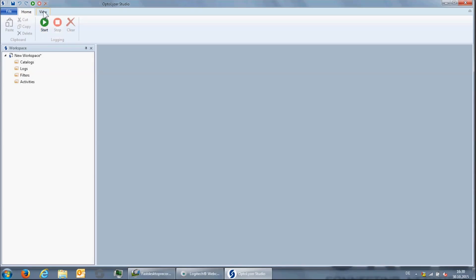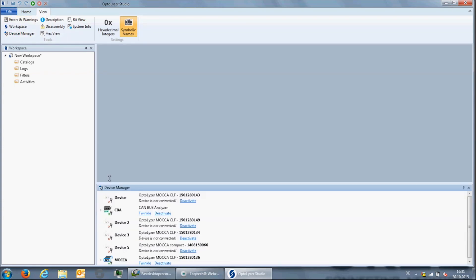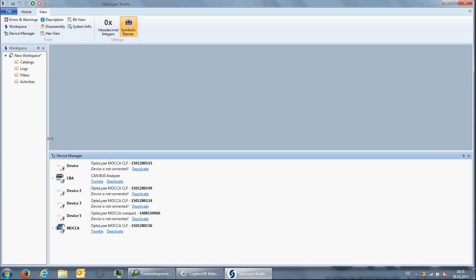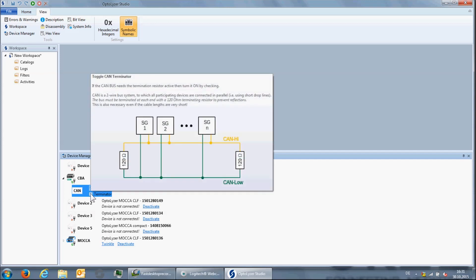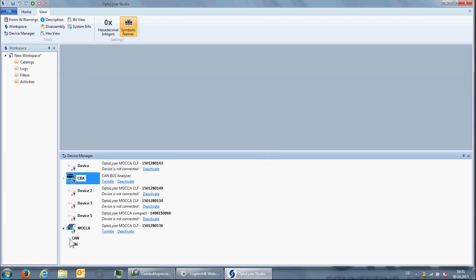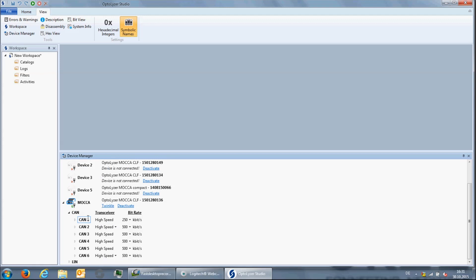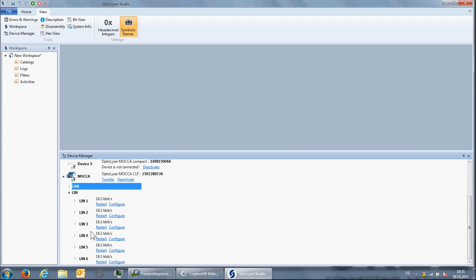Now we come to the Optalyzer Studio graphical user interface. The first thing we want to look at is the device manager, which can be used to change settings of the hardware interfaces that are connected to the PC. In this example, it is a microchip CAN bus analyzer for which we can set the baud rate and enable or disable a terminal resistor. We also see an Optalyzer Mocha device with six CAN and LIN interfaces. Of course, we can change the baud rate for the CAN interfaces as well and set the transceiver type for two of the interfaces.